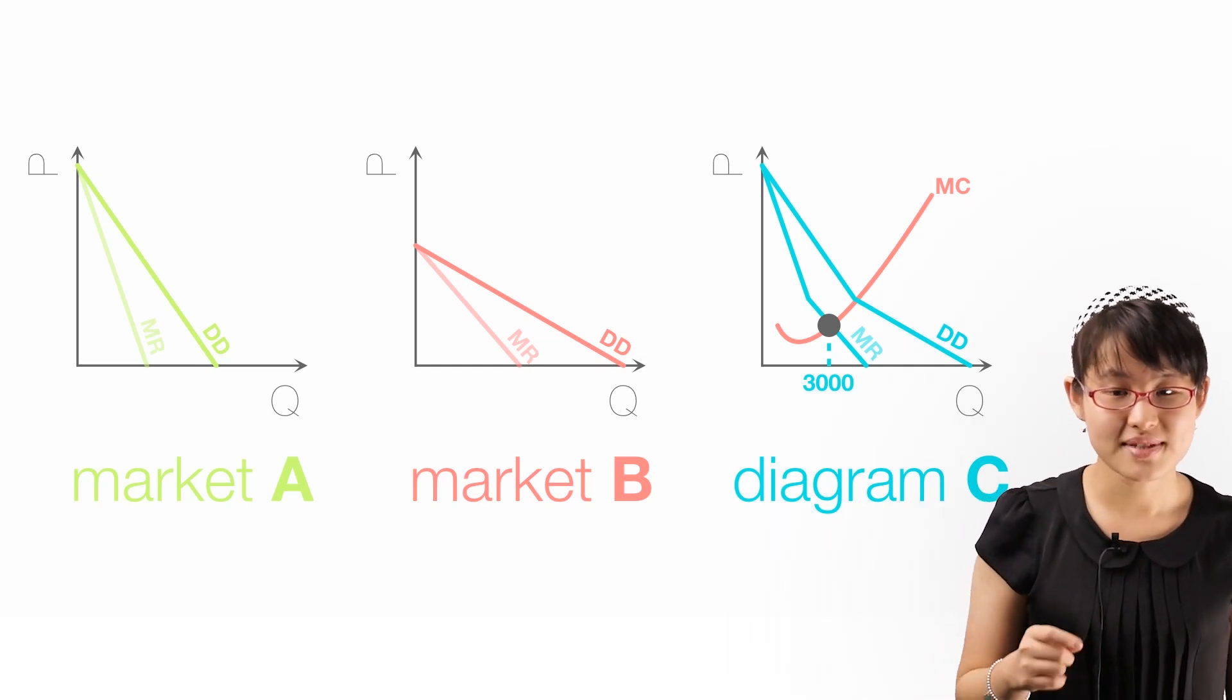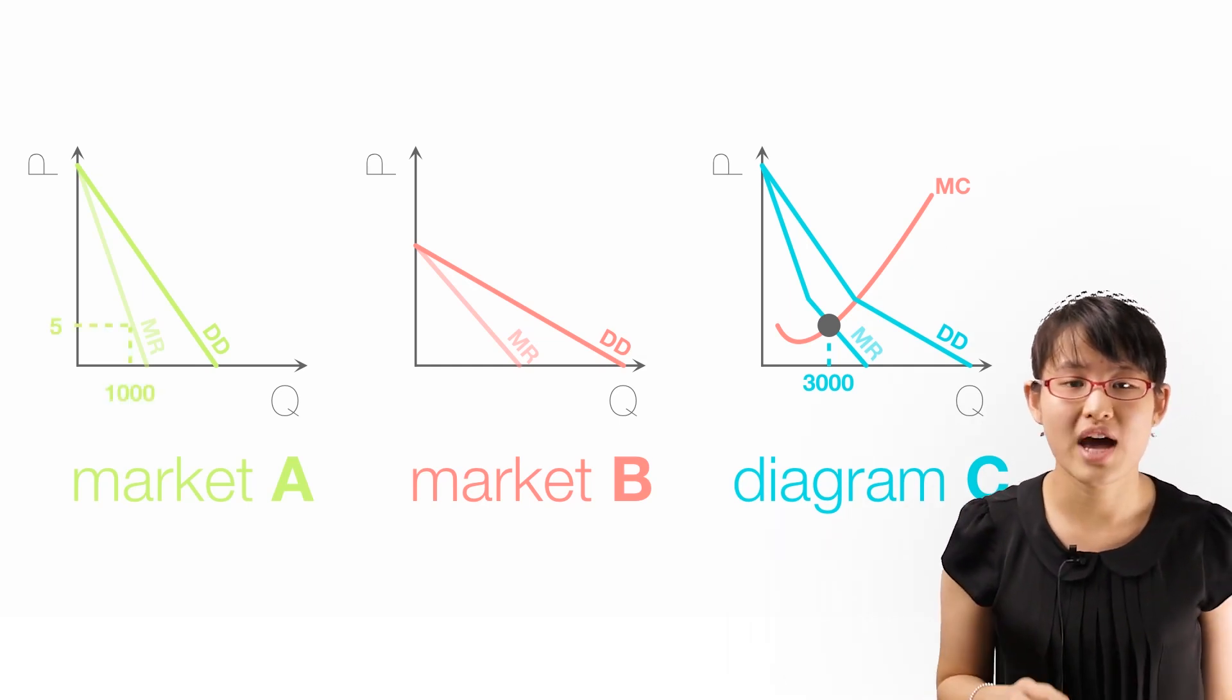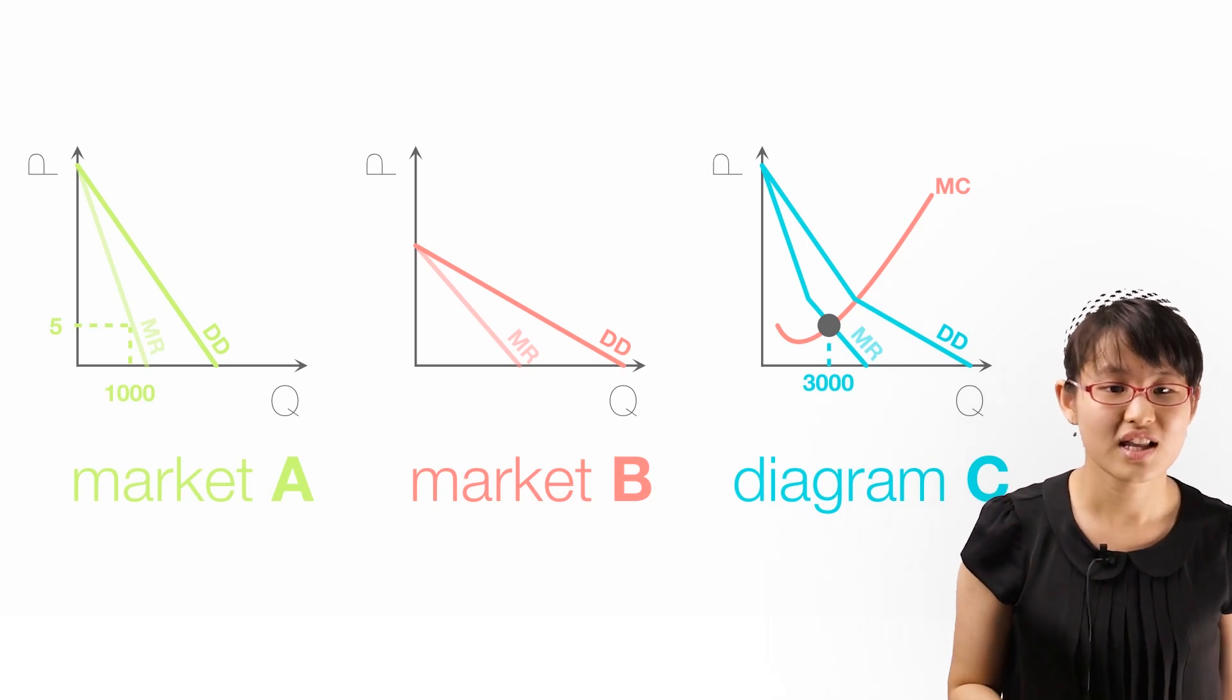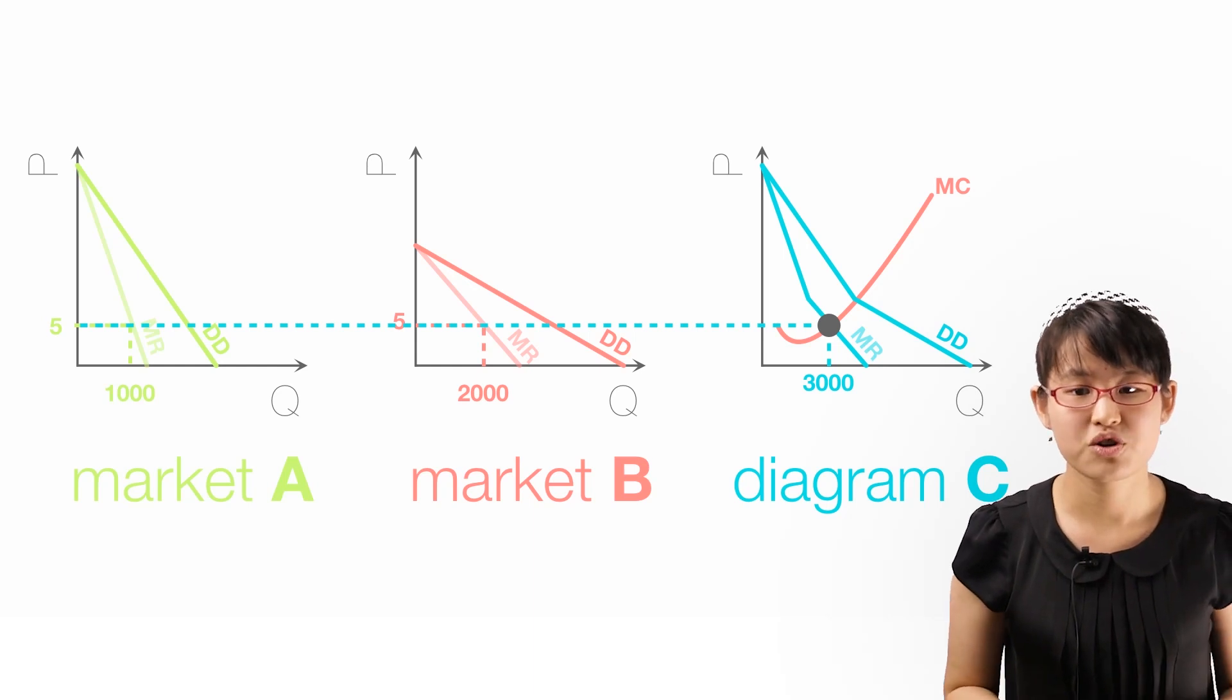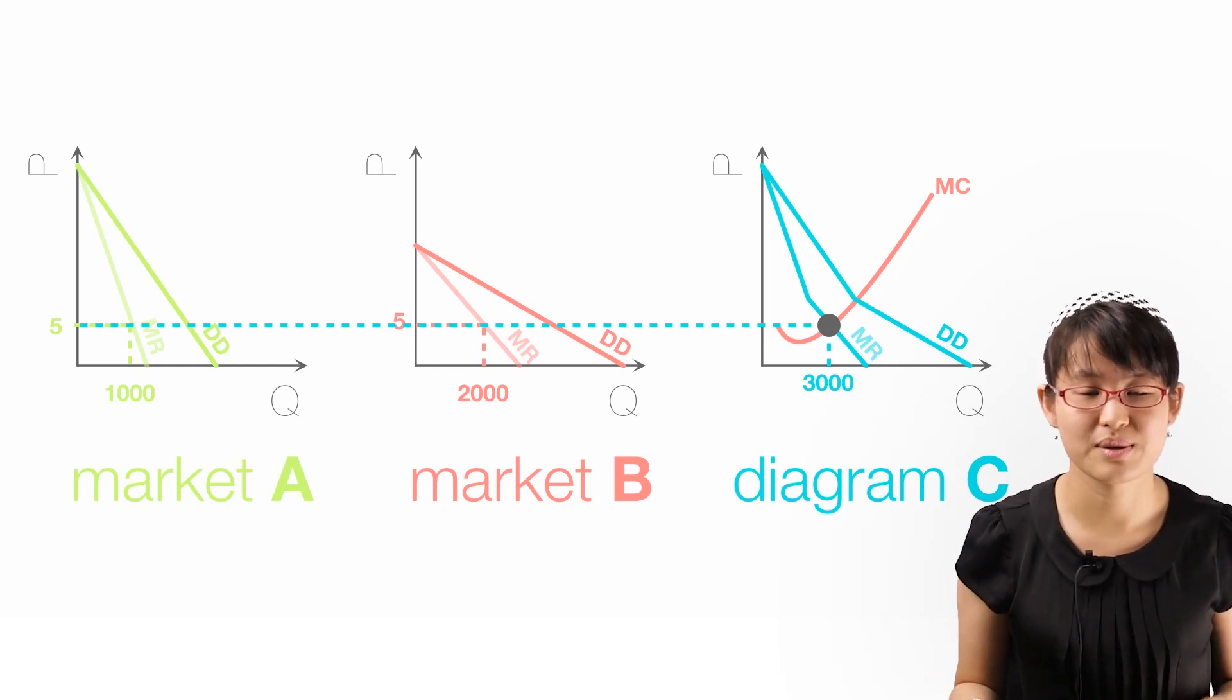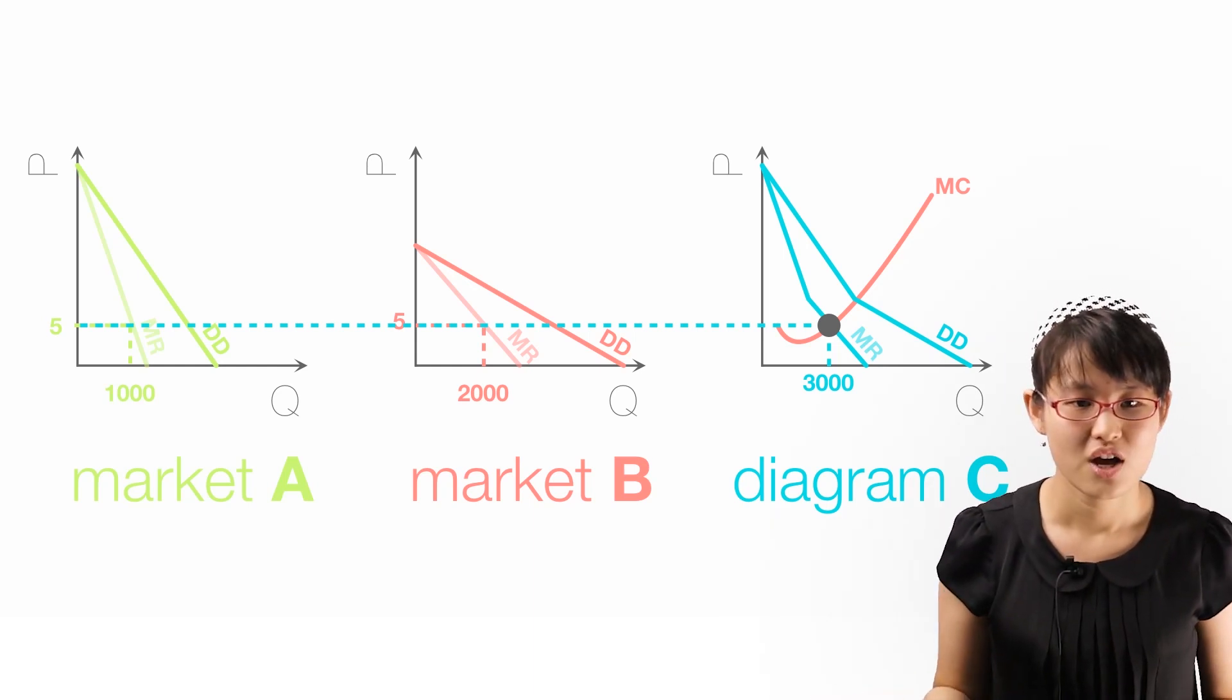We distribute output such that MC, which is $5, is equal to MR in each market. The last unit sold in each market must give the same MR, because if not, revenue could be increased by switching output to the market with the higher MR.